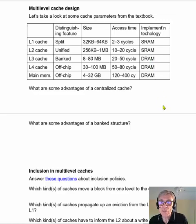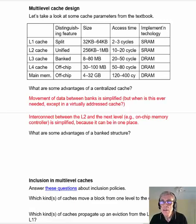So, comparing centralized versus bank structure, what are some of the advantages of centralized? Well, the first is that movement of data between banks is simplified, but as far as we've covered in this class, the only time we've seen when data actually need to be moved was in a cache that was virtually indexed and tagged, when one process shares data with another process, and there's a processor switch between the two. Another advantage is that the interconnect between the L2 and the next level is simplified, because it can be in one place. In distributed cache, you'd have to have parts of the interconnect all over the chip.